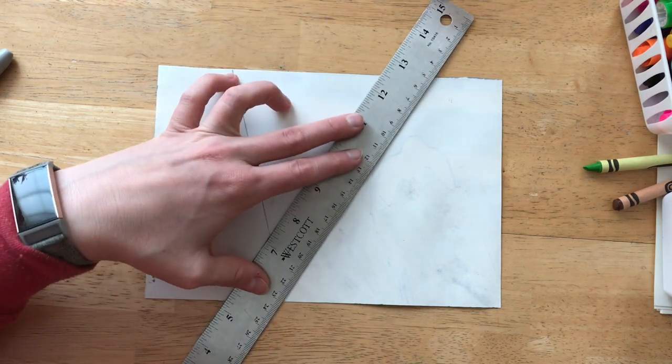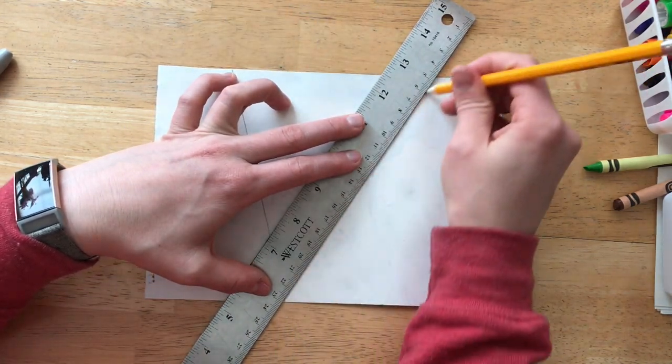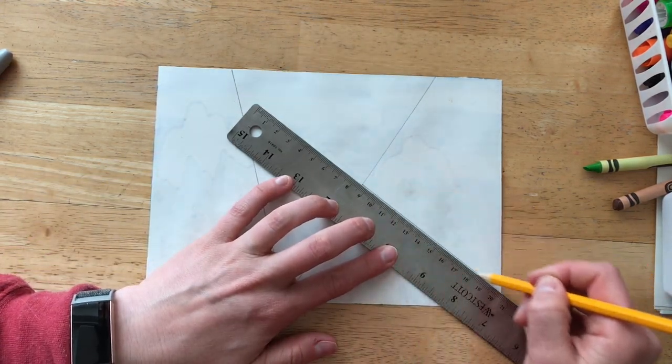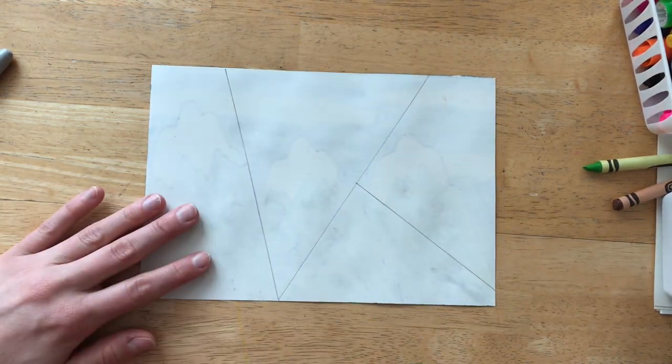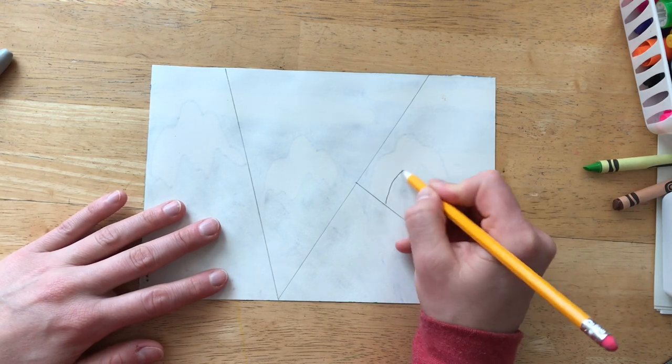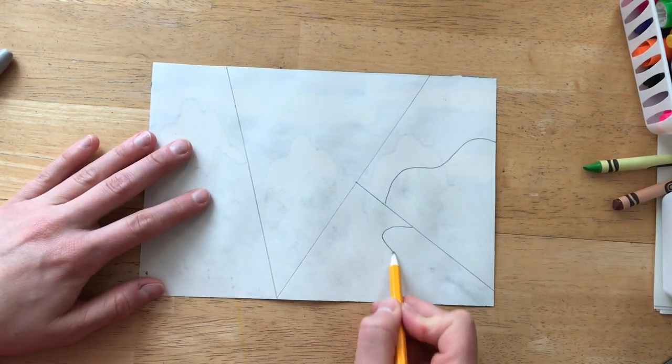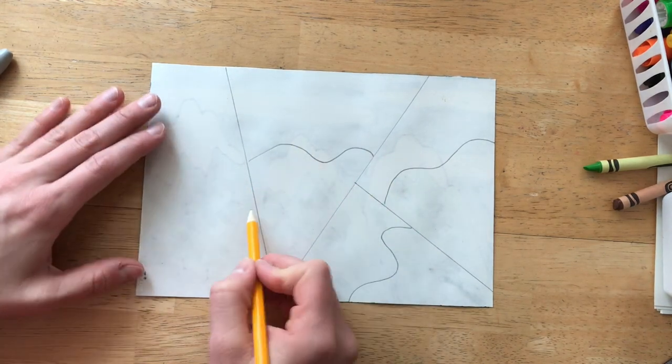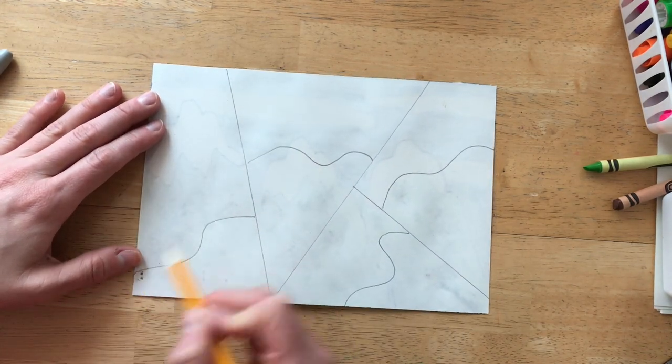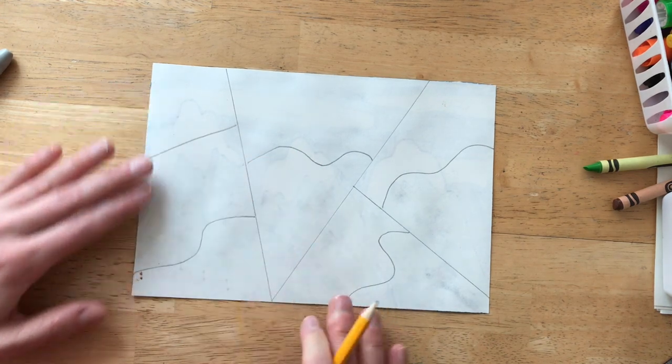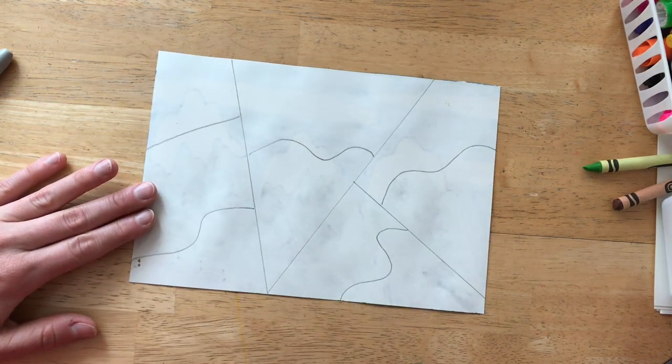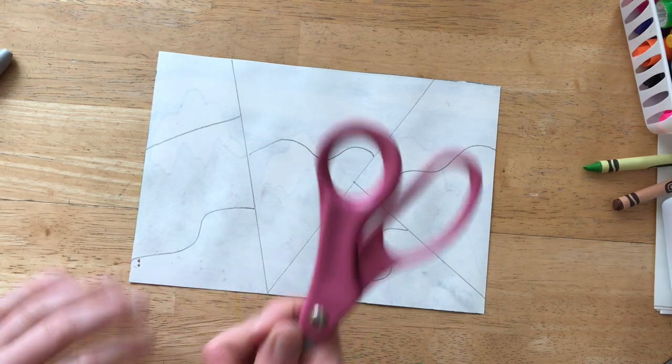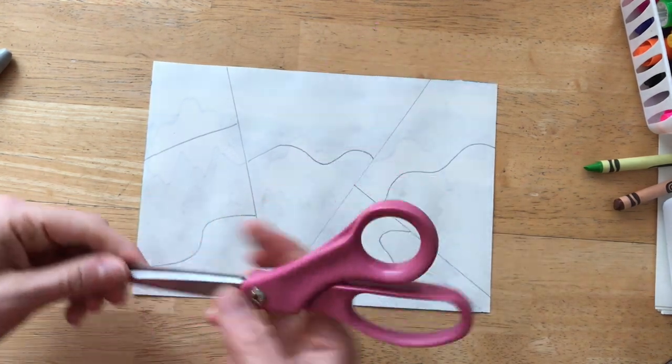I'm going to make one that goes all the way across my paper. I'm going to make sure that the other lines connect to the edges of the page or they connect to my other lines. I don't want too many pieces because they might be really small or they might get lost.